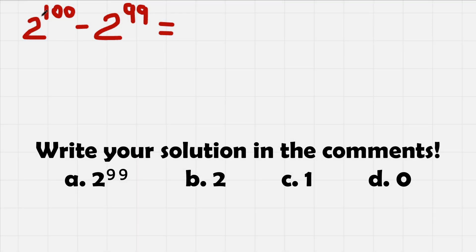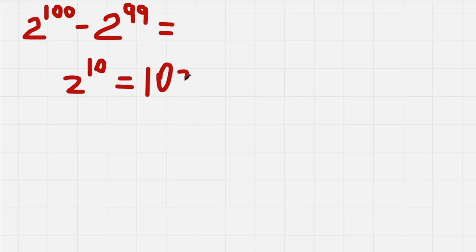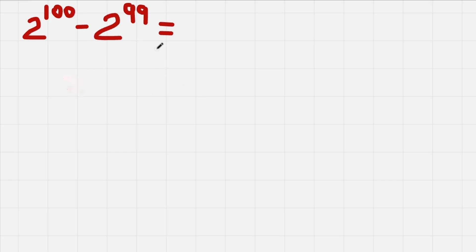Today we have a problem: 2 to the power of 100 minus 2 to the power of 99, and we need to solve this equation. To start with, we cannot just simply compute 2 to the power of 100 manually because this will be a really really big number. Even 2 to the power of 10 is already 1024, so imagine 2 to the power of 100. We cannot solve it like that.